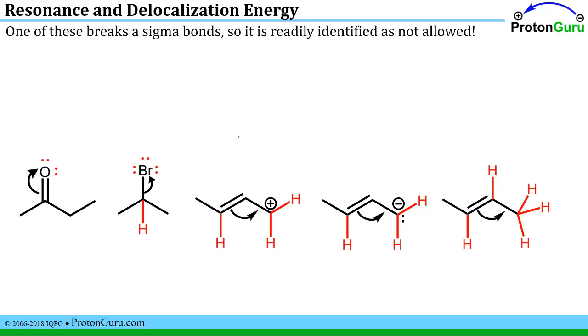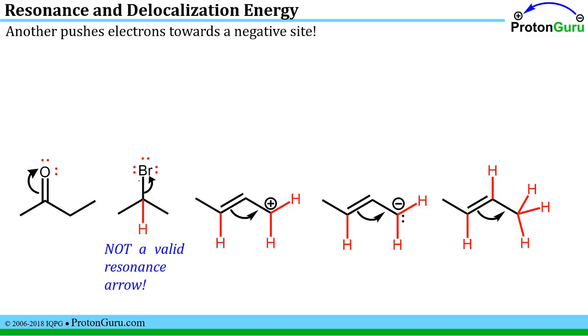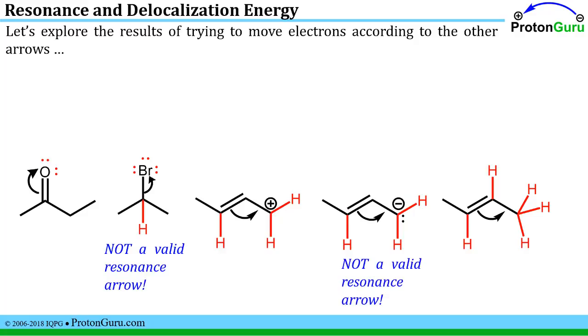So I've done that here and one of these structures clearly is breaking this sigma bond here. So that's certainly not allowed. Another one of these structures clearly pushes electrons towards an atom that's already negative and that's also not allowed. So now that we've gotten rid of those obvious not allowed resonance structures, let's take a look at what would happen if we tried to move electrons around according to the other suggested curved arrows.